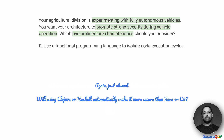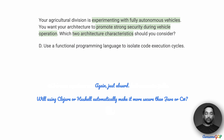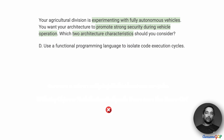Option D suggests using a functional programming language to isolate code execution cycles. Just using Clojure or Haskell does not automatically make code more secure than using Go, Java, or C#. Simply changing a programming language is not going to have any meaningful impact on our requirement of strong security. So option D is out too.